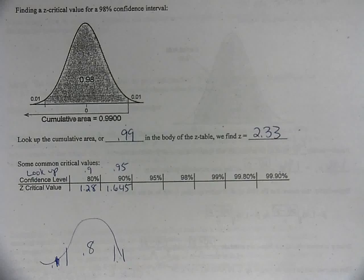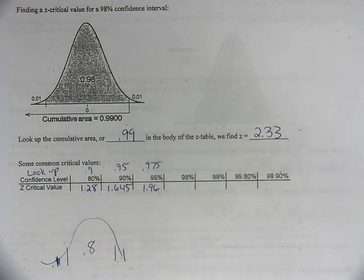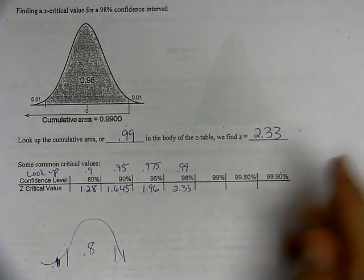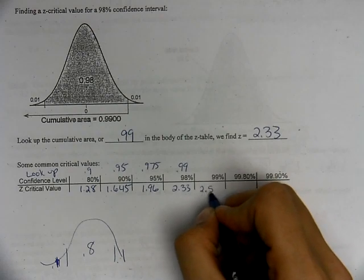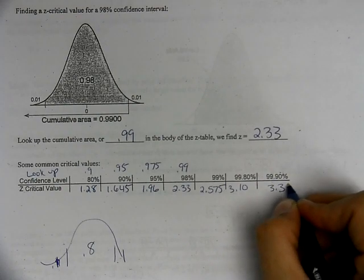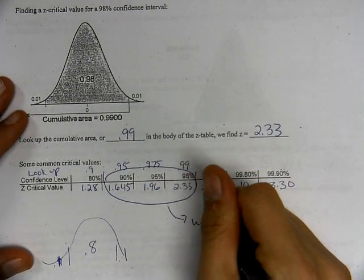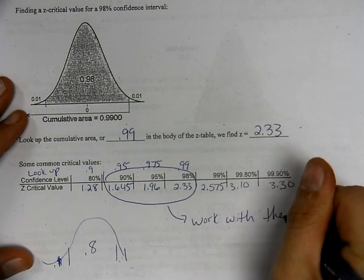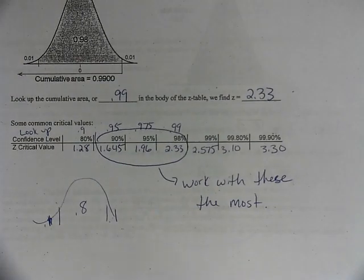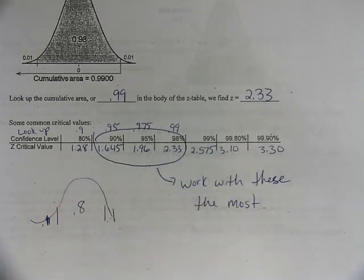If I look up 0.975, I get 1.96 — that's where that number comes from. Looking up 0.99 gives 2.33. For 99% confidence, the z-critical value is 2.575. These three — 1.96, 2.33, and 2.575 — are the most important and the ones we work with most. Eventually you'll want to memorize them; otherwise, you can always look them up.